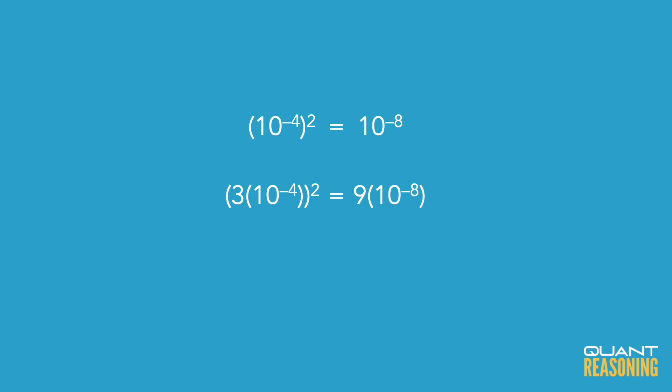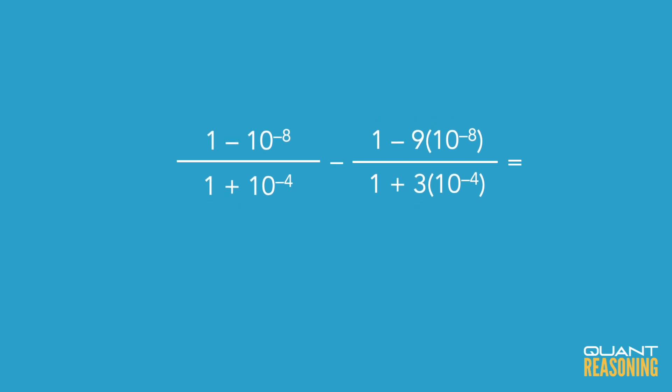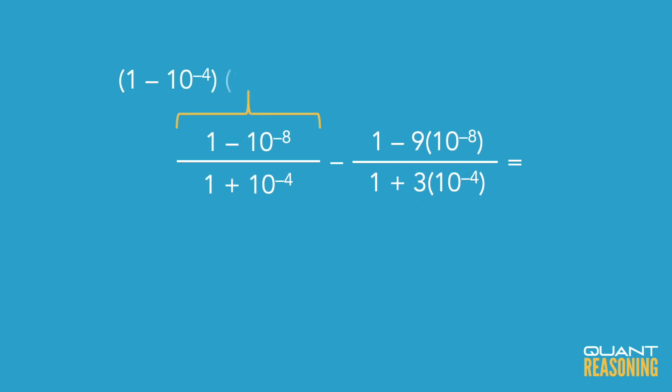So that might trigger something for us because we can rewrite the numerator of the first term using the special product a squared minus b squared equals a minus b times a plus b. So using that we can rewrite the numerator of the first term as 1 minus 10 to the power of negative 4 times 1 plus 10 to the negative 4.